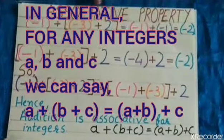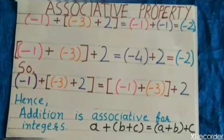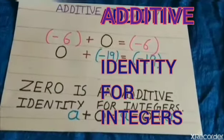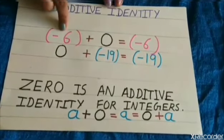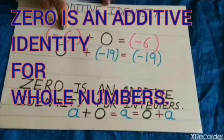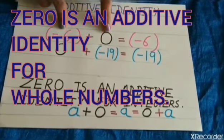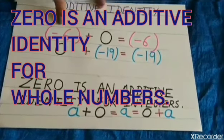Now, we will learn additive identity for integers. Now, additive identity. You know, for whole number, additive identity is 0. Now, let's check for integer.